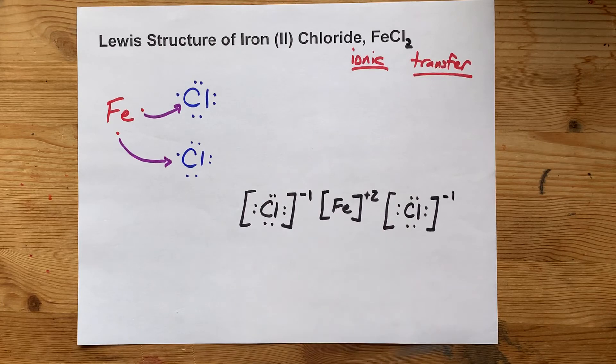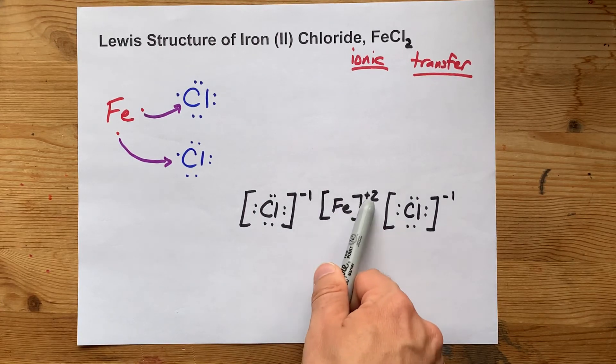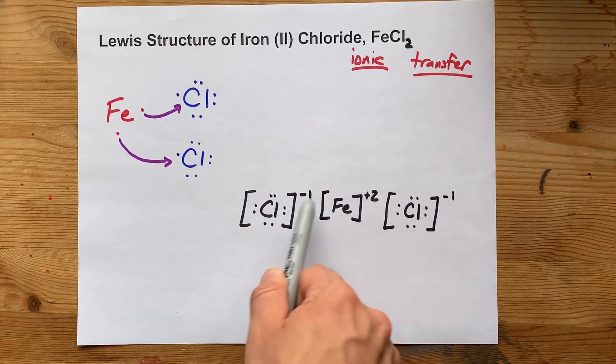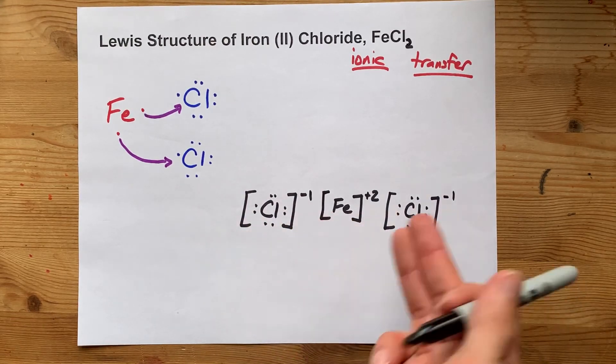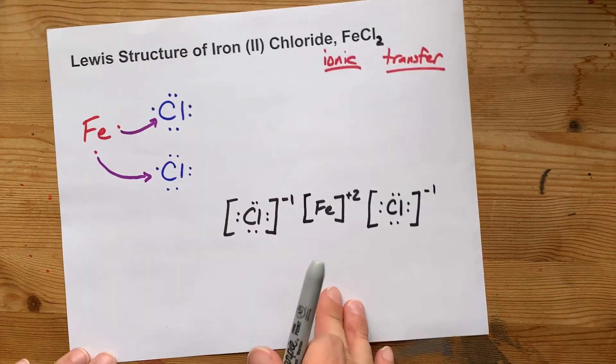FeCl₂, there's one Fe, there's two Cls. You got your charge on your Fe, your charges on your chlorine, and the same number of electrons in the final structure as we had in the originals.